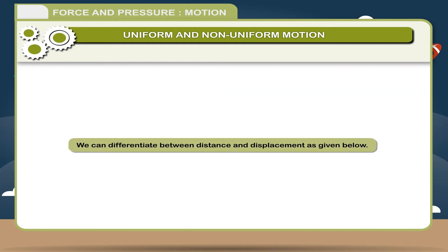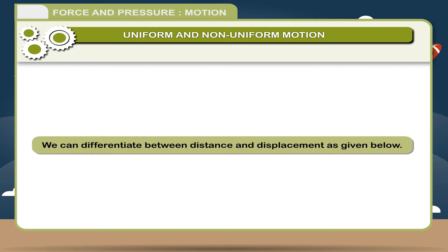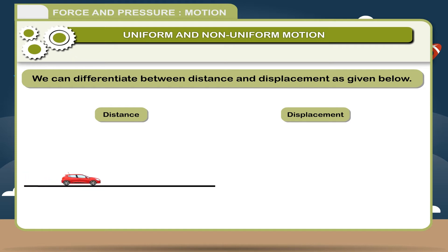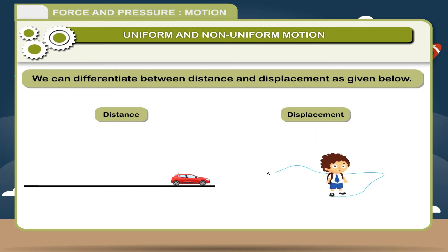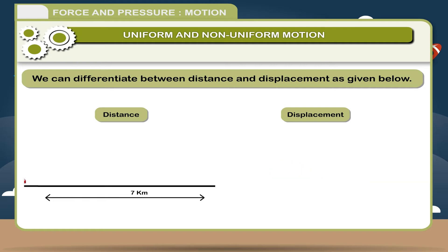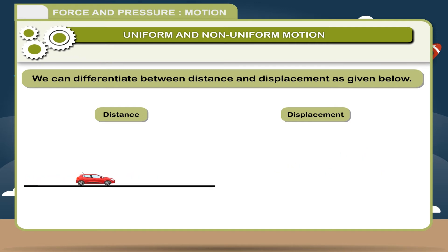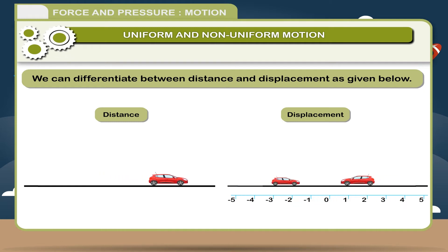We can differentiate between distance and displacement as follows: (1) The length of the path travelled by a body is called distance, while the shortest length between the initial and final position is called displacement. (2) Distance is a scalar quantity; displacement is a vector quantity. (3) Distance covered is always positive, while displacement may be positive, negative, or even zero.